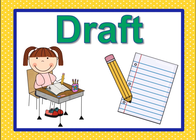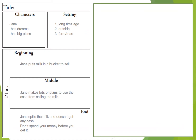Now we're going to take the information from my planner and turn it into a draft. Here I have my planner and I am just going to start writing. I read The Milk, so there's the story that I read — I listed the title. The story happened a long time ago, so I took that right from the setting box on my planner.